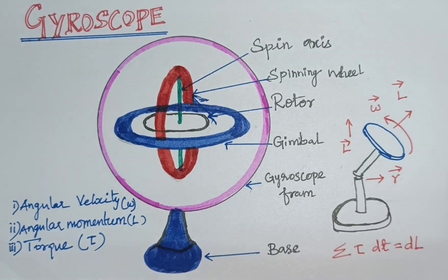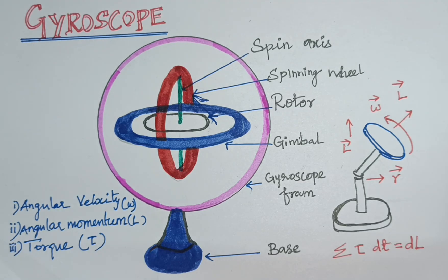Today we have discussed about gyroscope. What is a gyroscope? The gyroscope is a device which is used to measure or maintain the angular velocity and orientations without changing its magnitude.